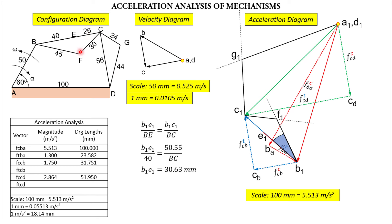Similarly for angle FCB: take angle FCB from the configuration diagram and transplant it to the acceleration diagram at F1C1B1. Using these two transplanted angles, F1 can be located precisely. In the same fashion, G1 can be located. The second method uses the ratio of proportional sides of similar triangles — the triangles in the config and acceleration diagrams are similar.